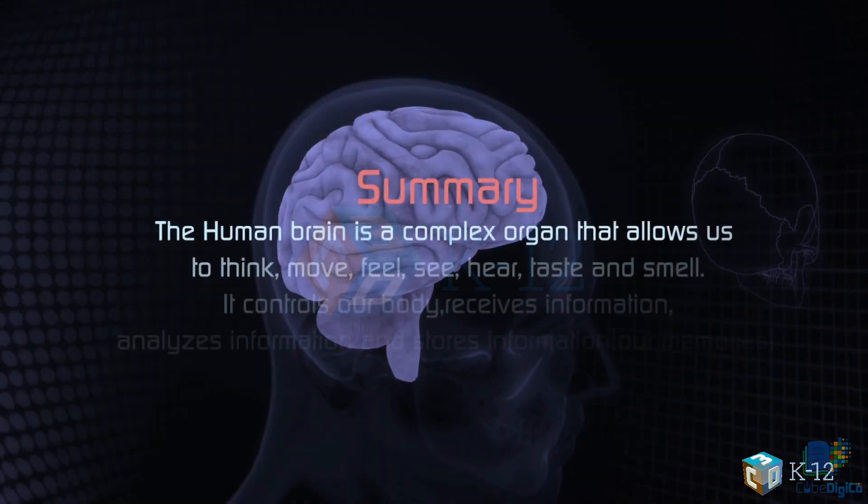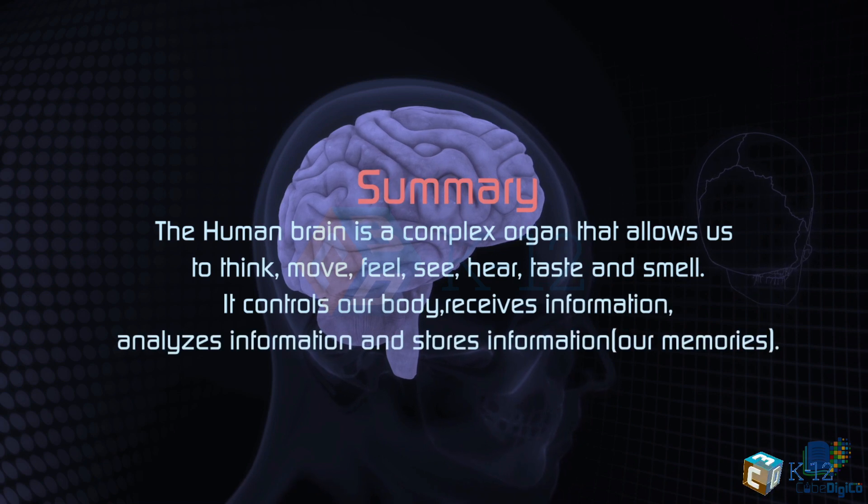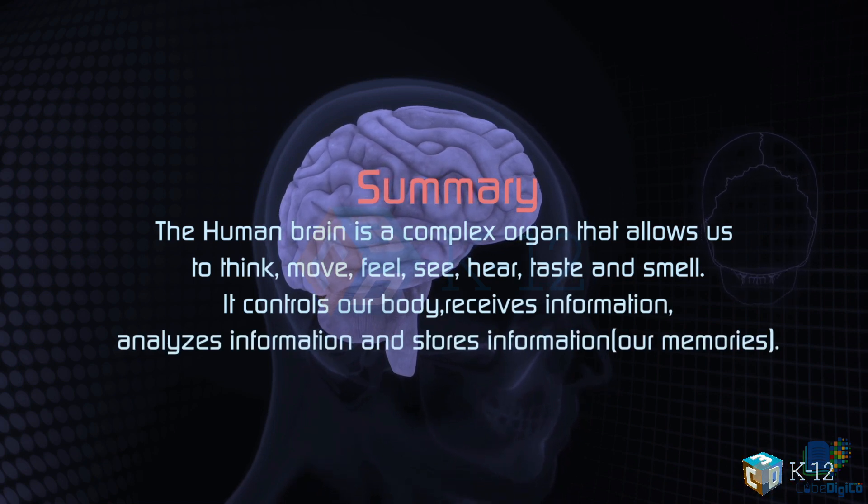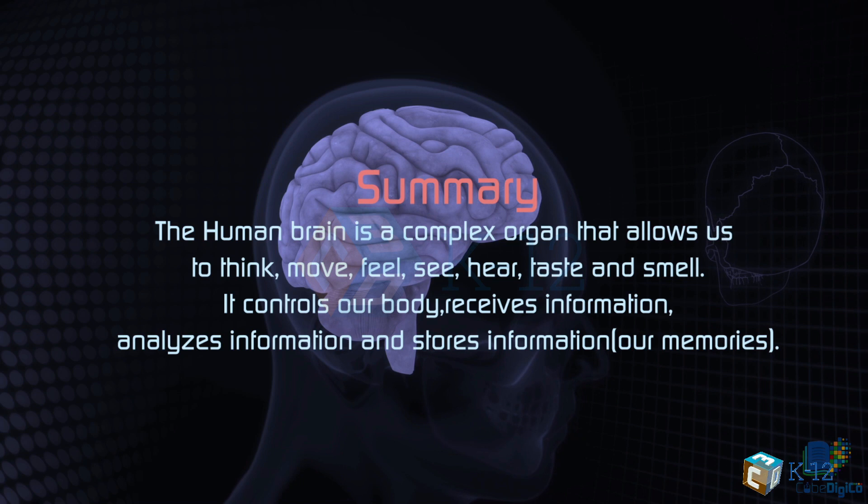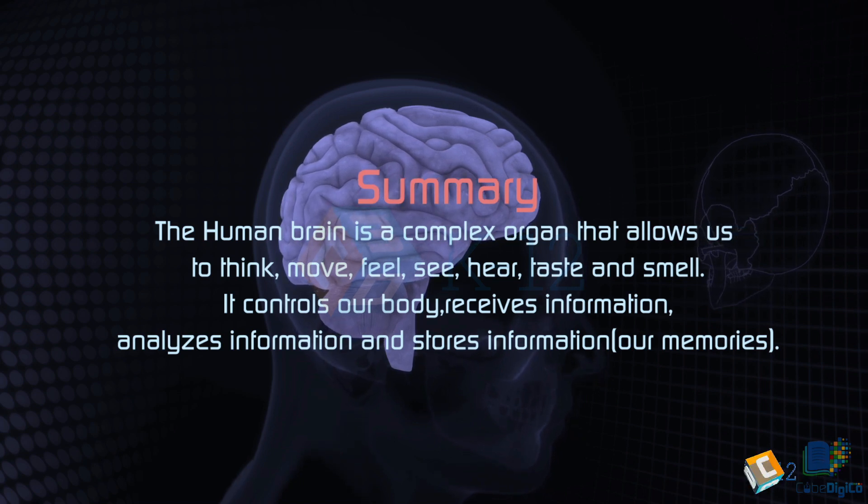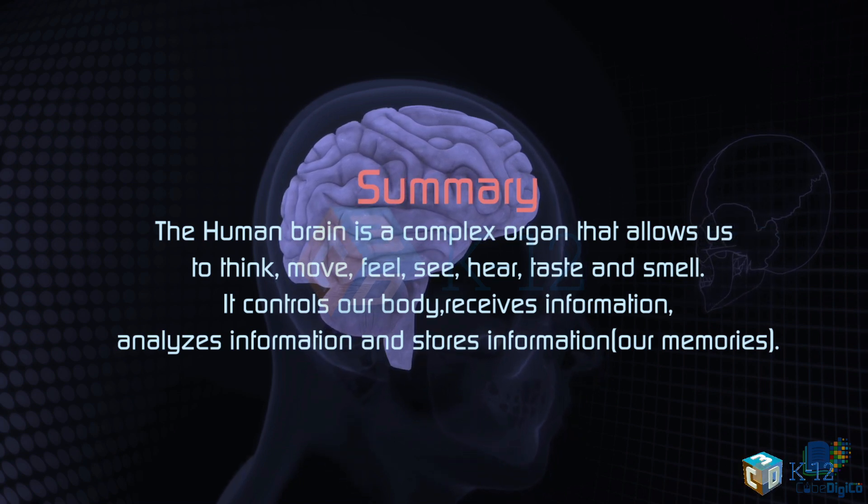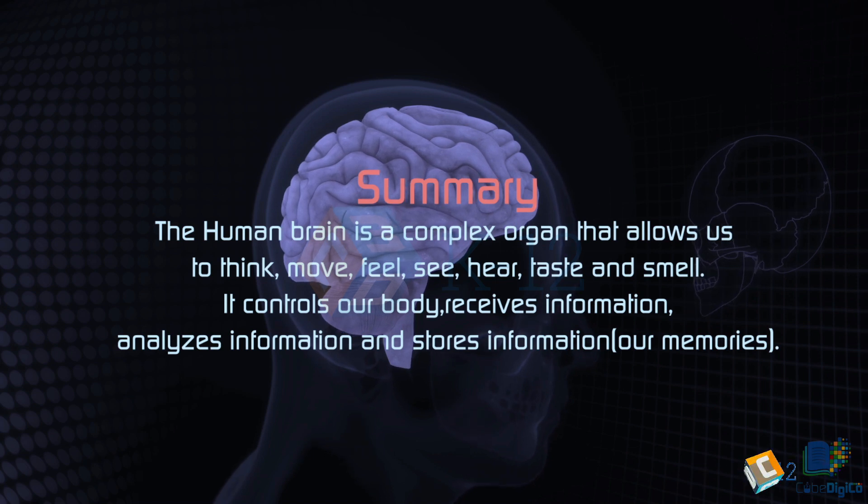Summary. The human brain is a complex organ that allows us to think, move, feel, see, hear, taste, and smell. It controls our body, receives information, analyzes information, and stores information, our memories.